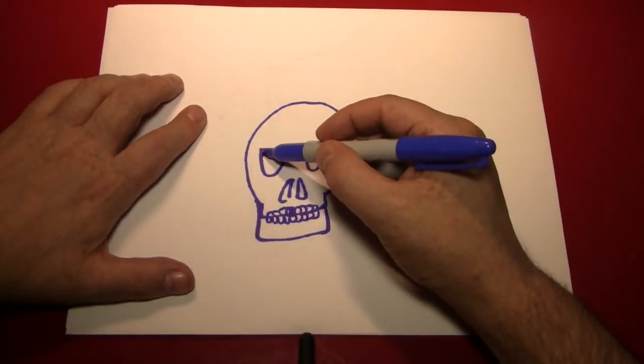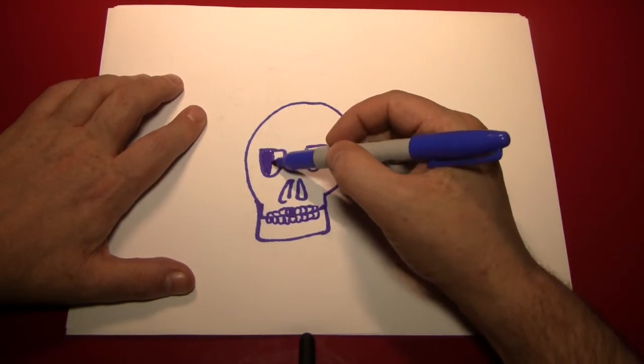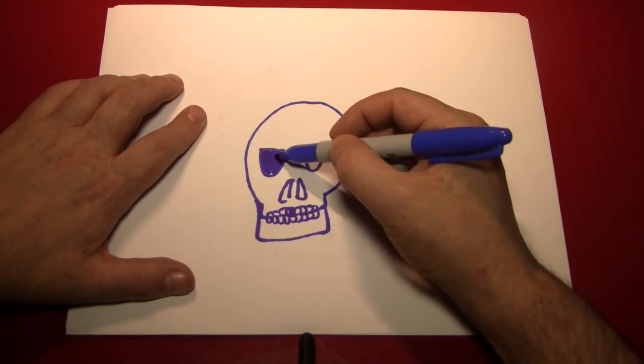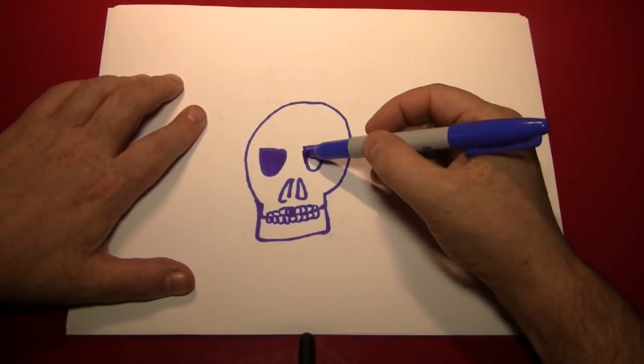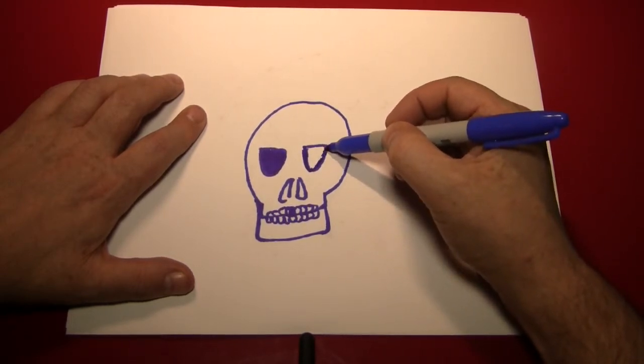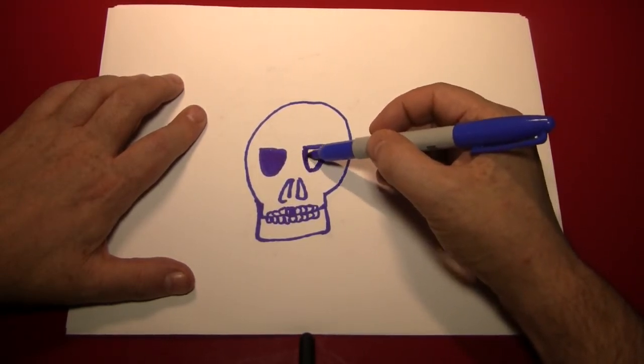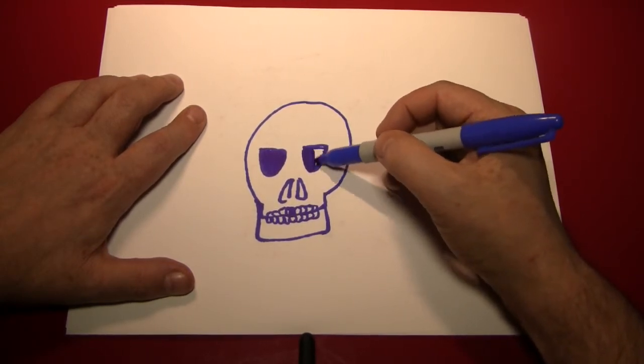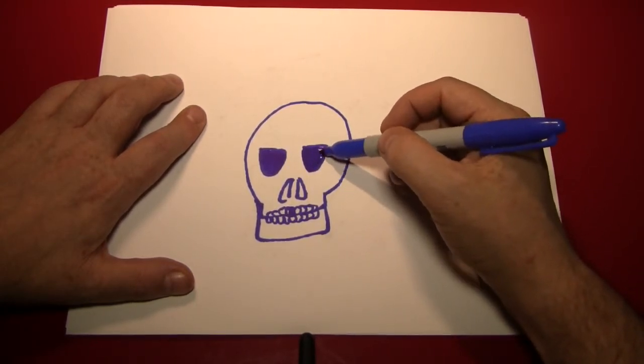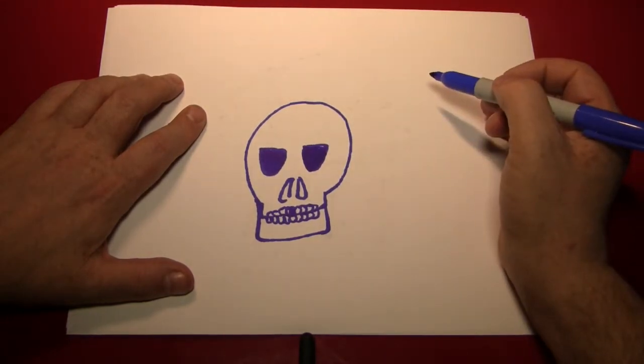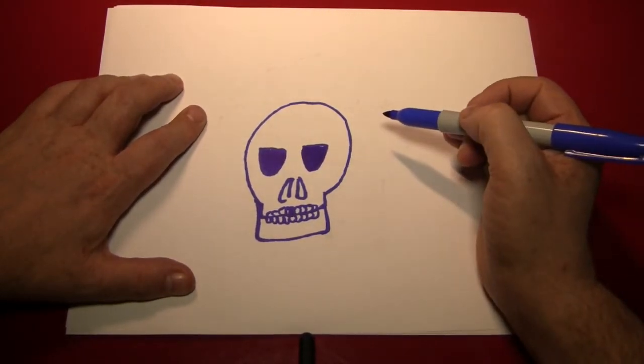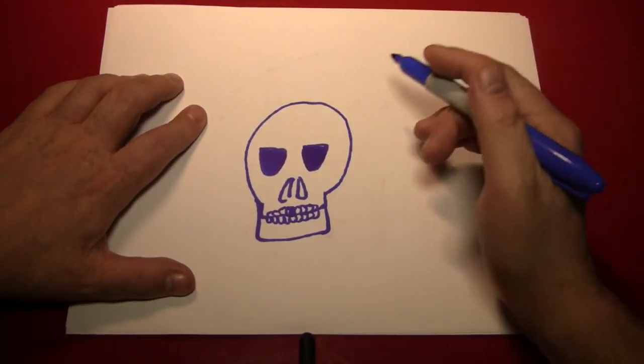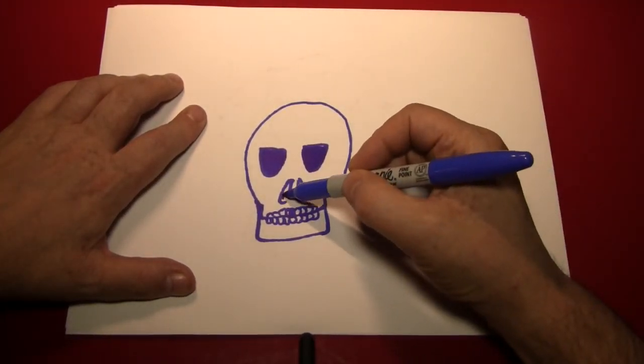We're ready to color in the eye sockets, which you should color in completely and fully, like that, to show that they are empty and hollow and no longer hiding a soul, as this is simply a skeleton. He's starting to look a little bit handsome, I would say. And don't worry if you've colored in one of the teeth over here like I have. It'll just look like one's missing. We can color in the nose, too.